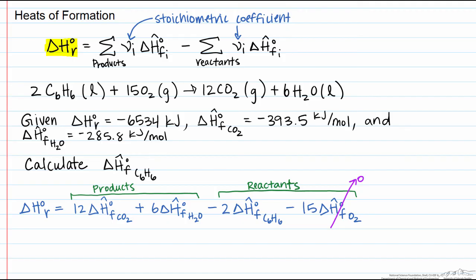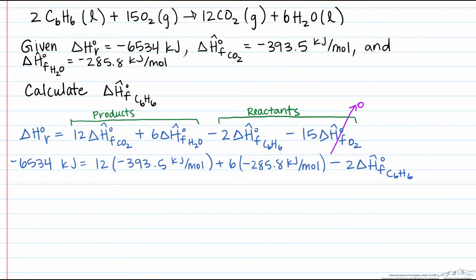And this has to equal the heat of reaction. So we can simplify this, and note that we are now in kilojoules instead of kilojoules per mole, because we multiplied those heats of formation by moles. So now all we have to do is solve for this heat of formation, which is equal to a positive 48.6 kilojoules per mole.